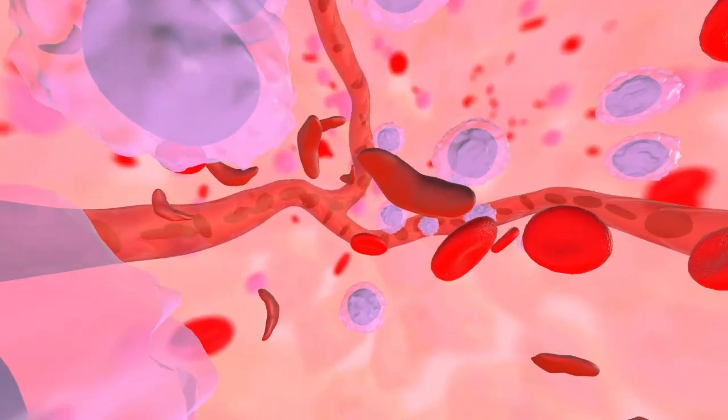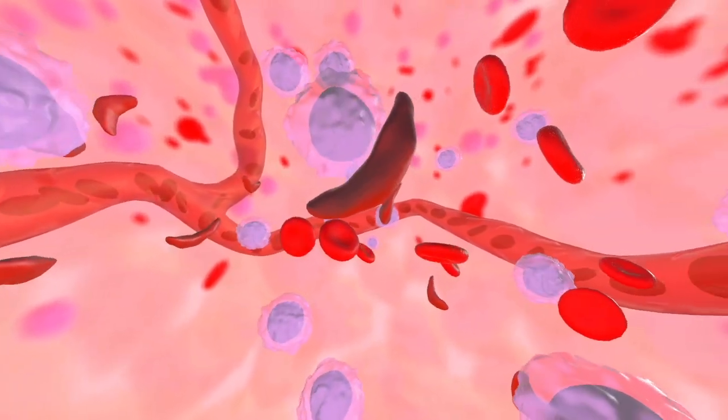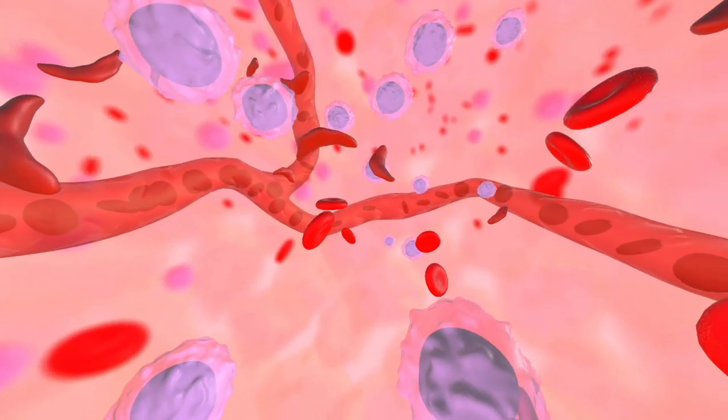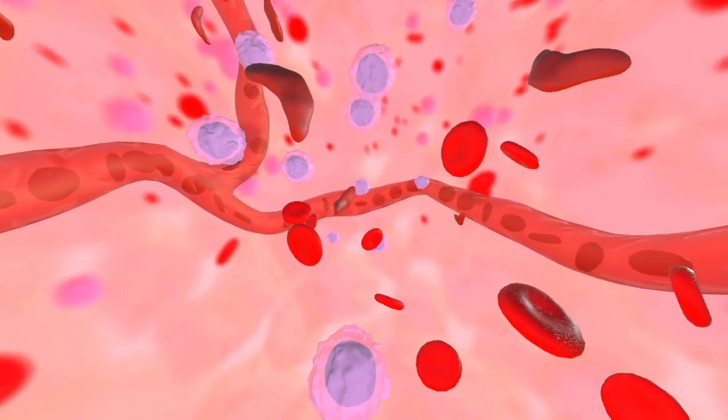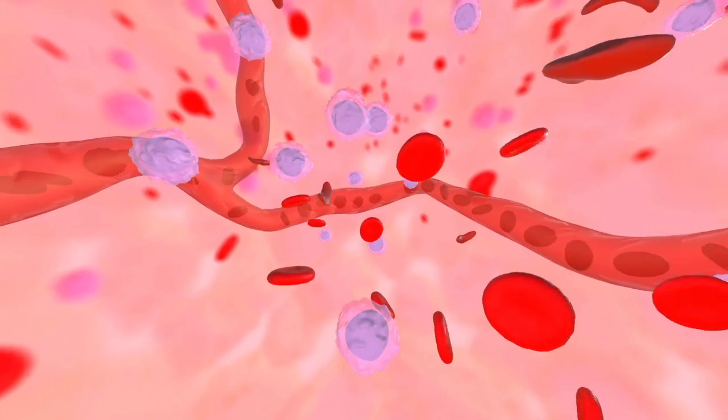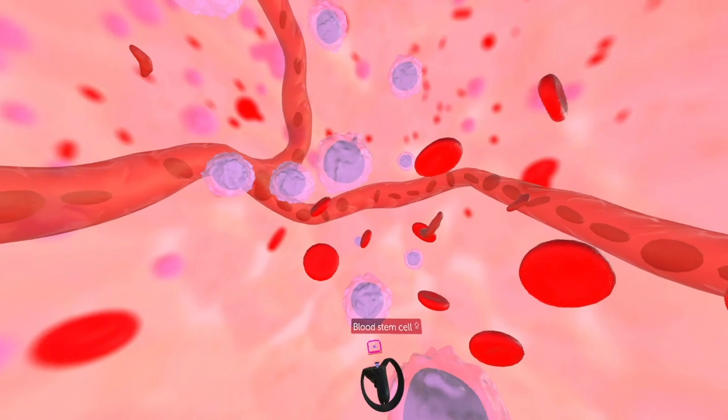We're now in the bone marrow, and this is where all of your blood stem cells live - those are these whitish-purplish cells. These are the cells that are responsible for dividing to make all of your new red blood cells. If we can fix the DNA in these cells, we can keep all of the red blood cells that come from those stem cells healthy. Let's point at a blood stem cell and zoom in.